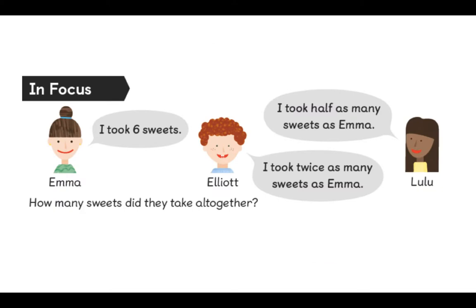Here is our problem today. Emma has six sweets. And Elliot and Lulu have also taken some sweets. But we don't know how many they took. All we know is that Lulu took half as many as Emma. And Elliot took twice as many sweets as Emma. Our challenge for today is to work out how many sweets they took altogether. Now, I've been looking at the question very carefully, and I have spotted some of our vocabulary. I can see the words half and twice as many.